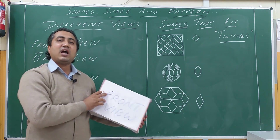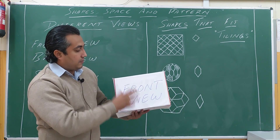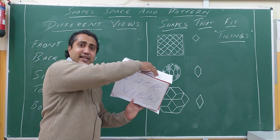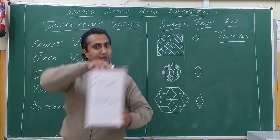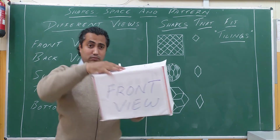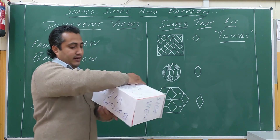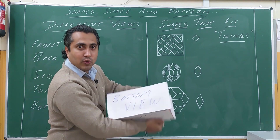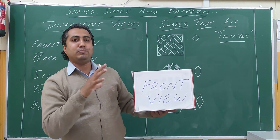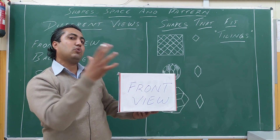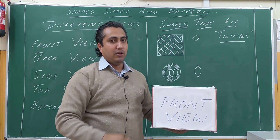So these are the different views that we can see: front view, back view, side view, top view, and bottom view. That is — from where are we looking at the object, according to that is the view.